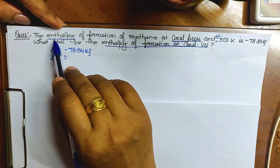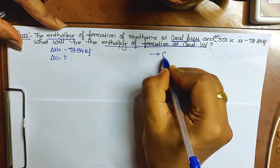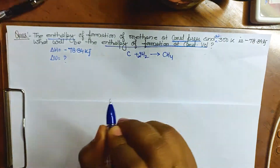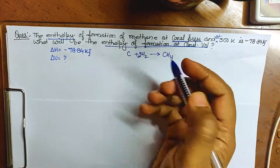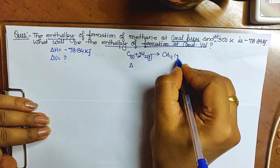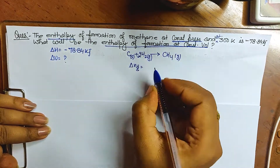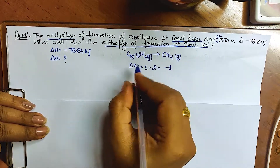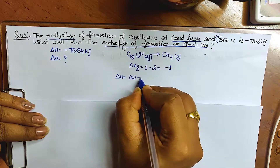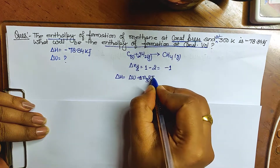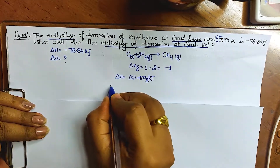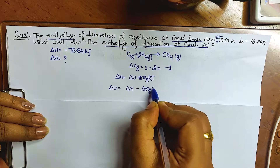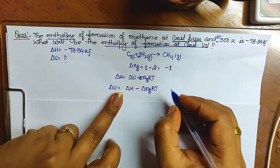The reaction for methane formation is: C(s) + 2H₂(g) → CH₄(g). Now find delta Ng. The product side has 1 mole of gas, the reactant side has 2 moles of gas (solid is not counted), so delta Ng = 1 − 2 = minus 1. Using the formula delta H = delta U + delta Ng × R × T, we rearrange to find delta U = delta H − delta Ng × R × T.